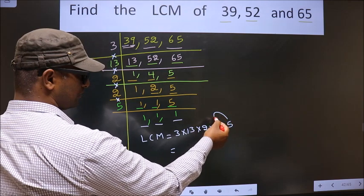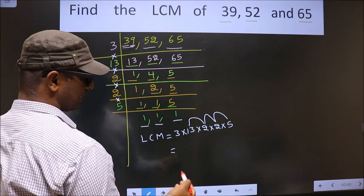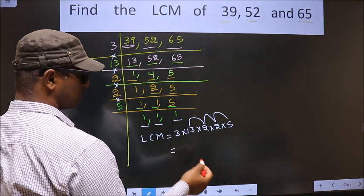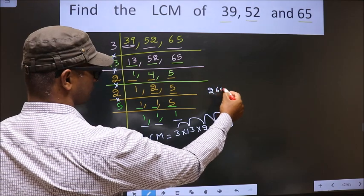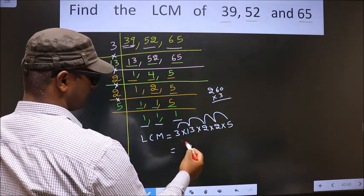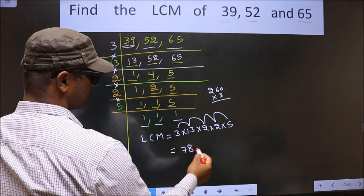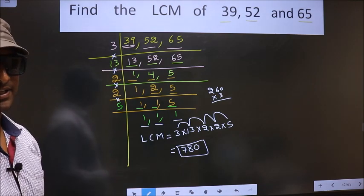So 5 into 2 is 10. 10 into 2 is 20. 20 into 13 is 260. 260 into 3: 3, 6, 18; 3, 2, 6, 1, 7. So we get 780. This is our LCM.